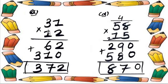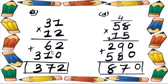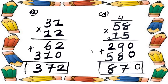Question number C: 31 multiplied by 12. Step 1 — we multiply with 2: 2 ones are 2, then 2 threes are 6. Step 1 is done. Now we put the compulsory zero. Step 2: 1 ones are 1, then 1 threes are 3.